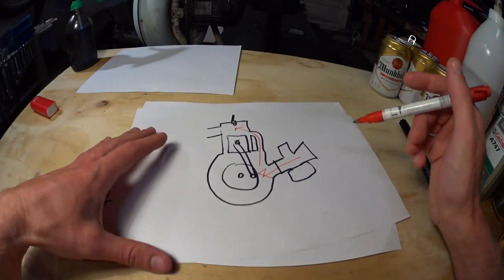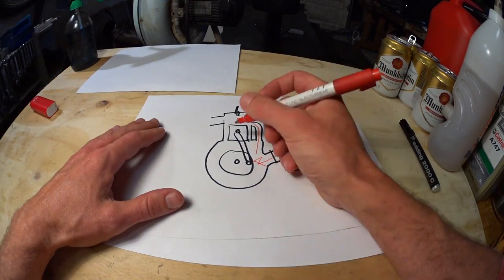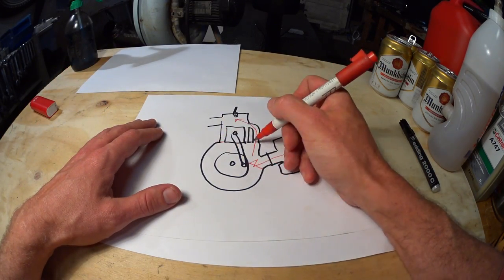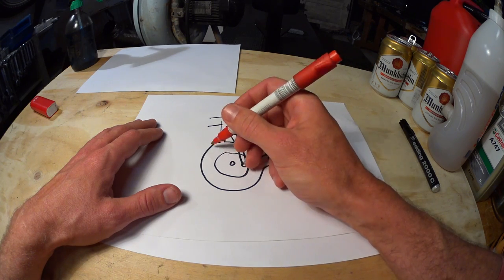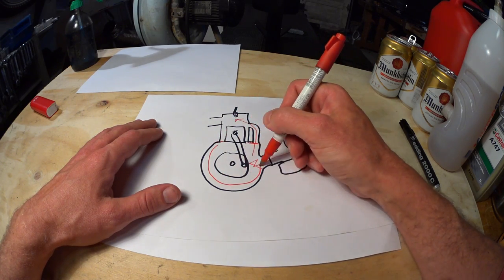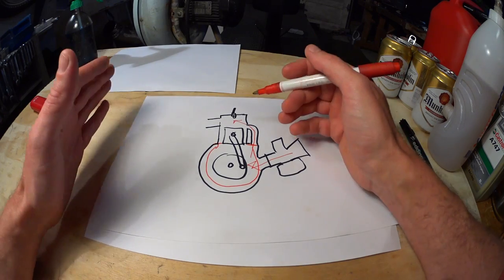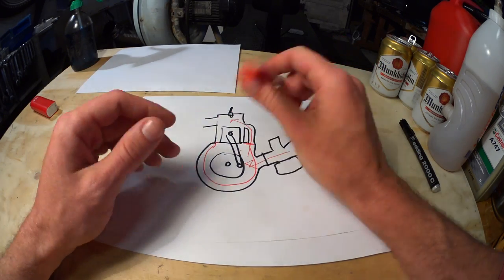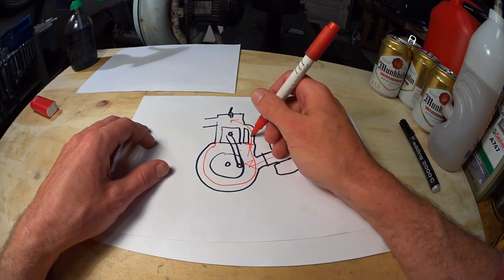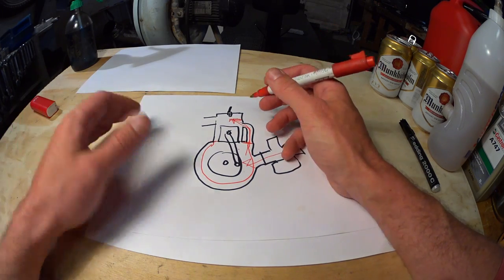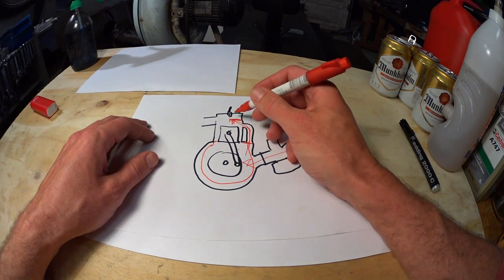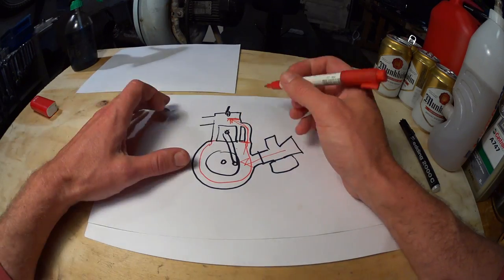About crankcase volumes. In a traditional two-stroke, increasing crankcase compression and lowering crankcase volume will lead to power gains, because the mixture is delivered at the higher pressures through the transfers. So more mixture is delivered faster, up into the cylinder, up to a point.